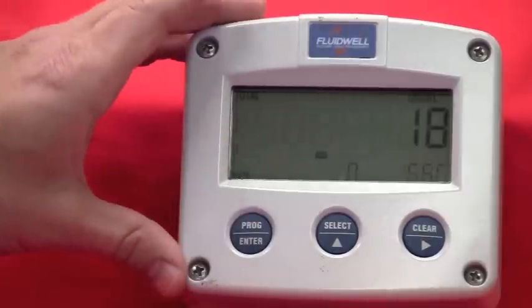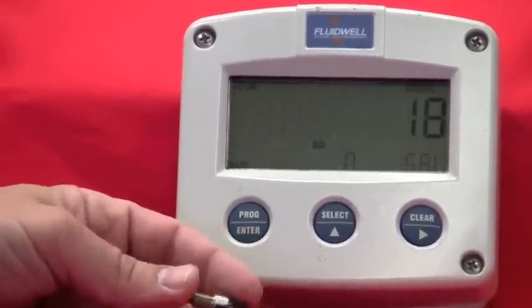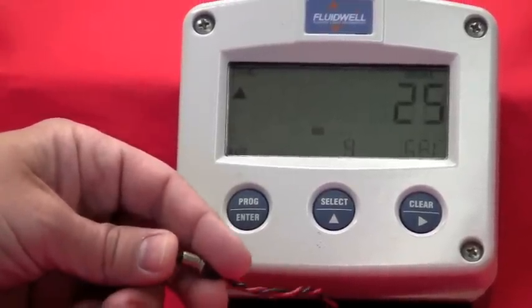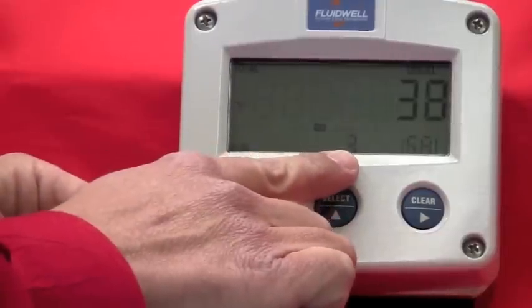The demo itself is a battery-powered unit, and we're simulating a pulse input from a flow meter with our little switch here. To simulate flow, just push the buttons in. You'll see the totalizer count up, and then you'll also see the flow rate as indicated here on the bottom.